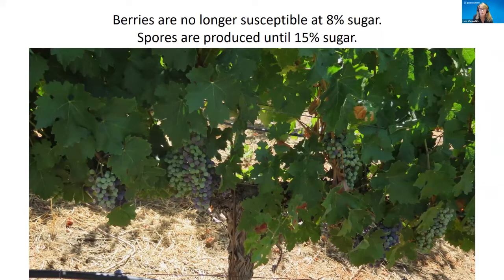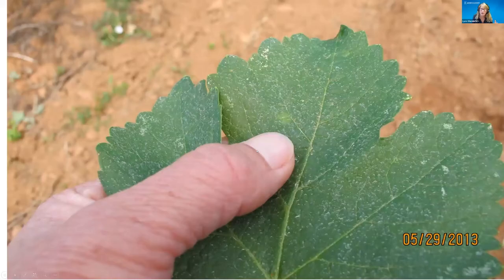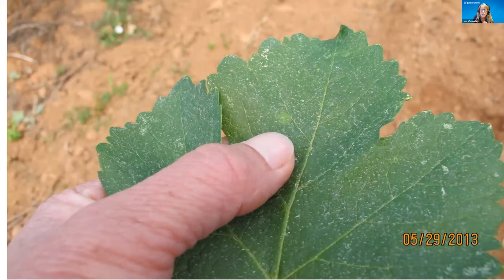Not all berries go into veraison at once, so you have some susceptible berries alongside some that are no longer susceptible — you need to continue protecting this fruit. One of the main challenges with controlling powdery mildew is how critical early treatment is and how difficult it is to see the fungus when it's first growing.